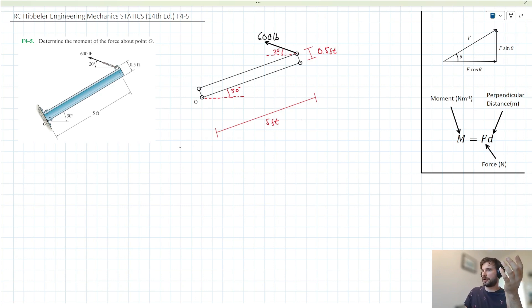Looking at this problem, what we could do is solve for this length here and this length here, and we could then use that combined with the horizontal and vertical components of this 600 lb force, and we could solve for the moments about point O that way.